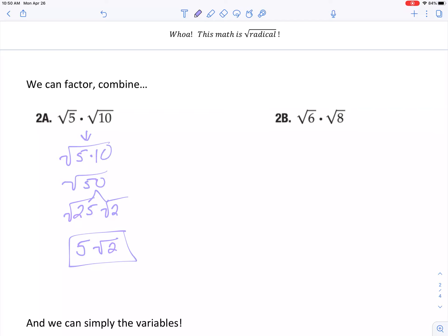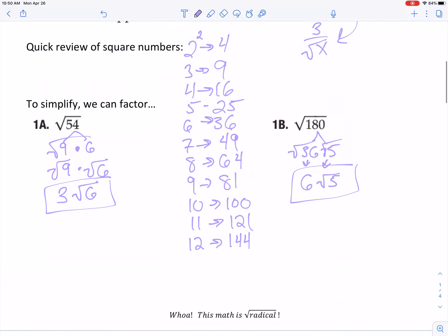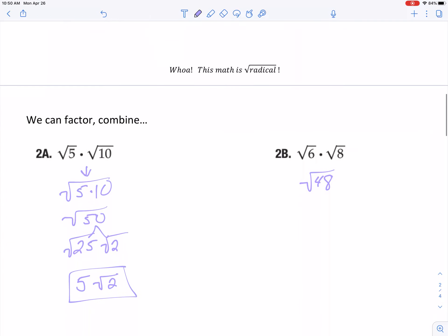If I want to try this other one, 6 times 8 is going to be 48. What number evenly goes into 48? I think it's going to be a 16. What do you think? 16 times 3. And the square root of 16 is 4. Bring down that root 3. And that's my answer.